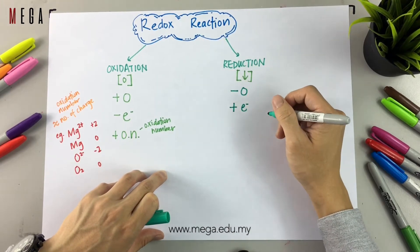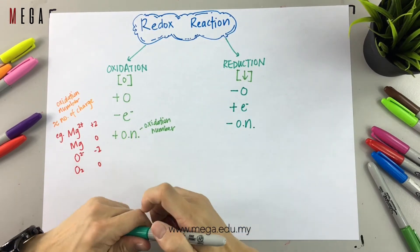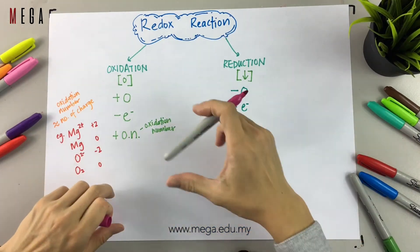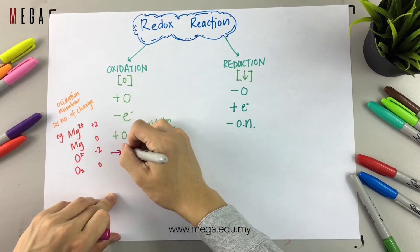Therefore, moving on to reduction. Reduction happens when the compound loses oxygen, gains electrons, or decreases in oxidation number.